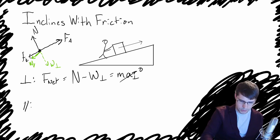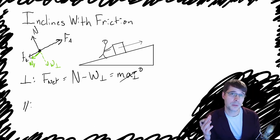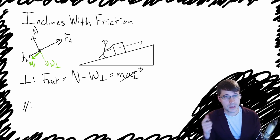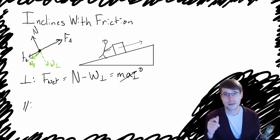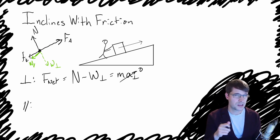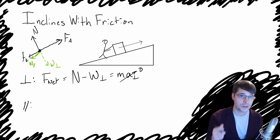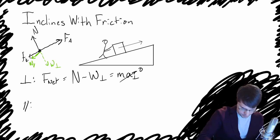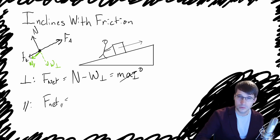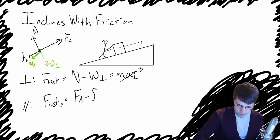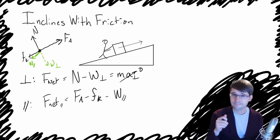Let's write down the sum of the forces equation for the parallel direction. There are three forces that are either straight uphill or straight downhill: the applied force uphill, the friction, and the weight parallel downhill. Since the object is accelerating up the hill, I'm going to pick that as our positive direction. So the net force in the parallel direction equals FA minus FK minus the parallel part of the weight.